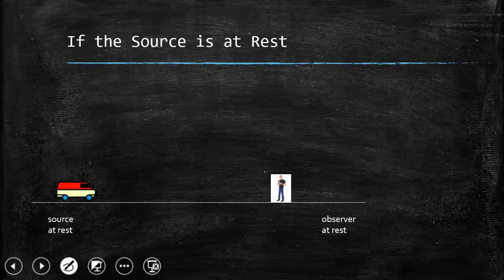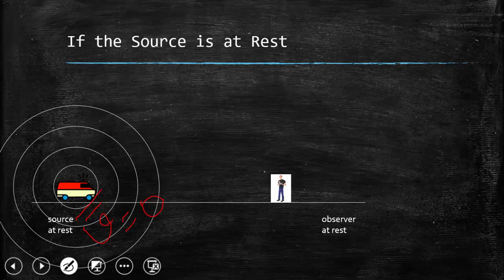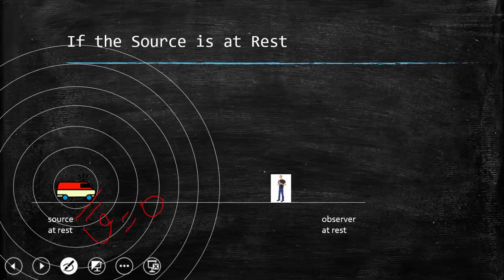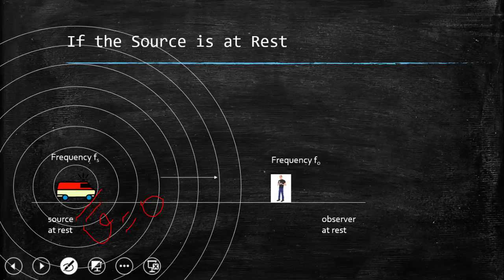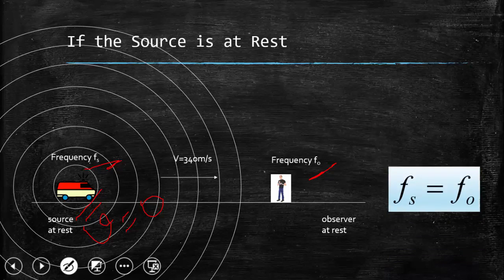Now, if the source is at rest — say this car is at rest, so velocity of this car is zero — when it creates sound, the wavefronts are equally spaced. And the observer is also at rest. So the frequency of the source is the same as the frequency heard by the observer.